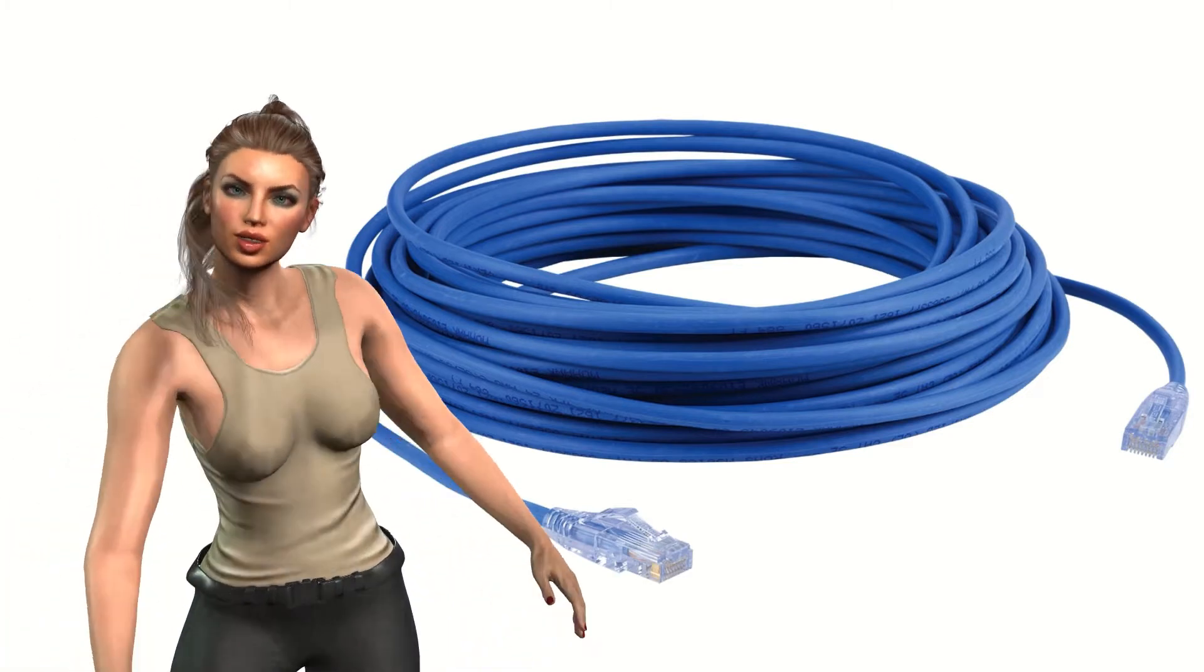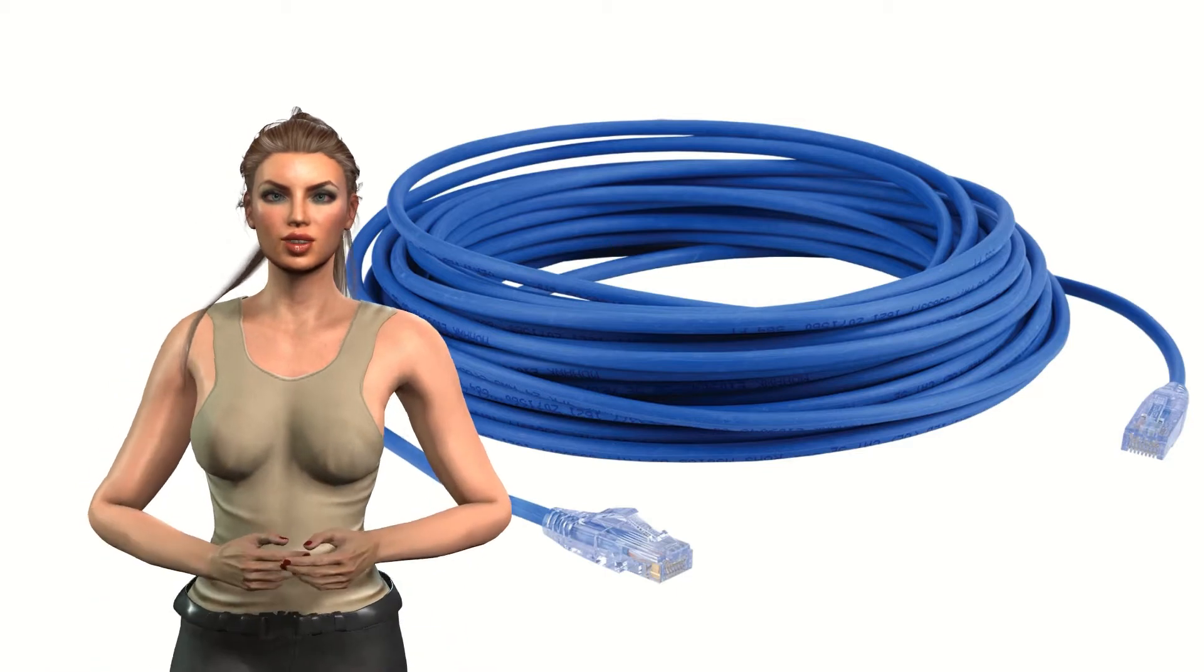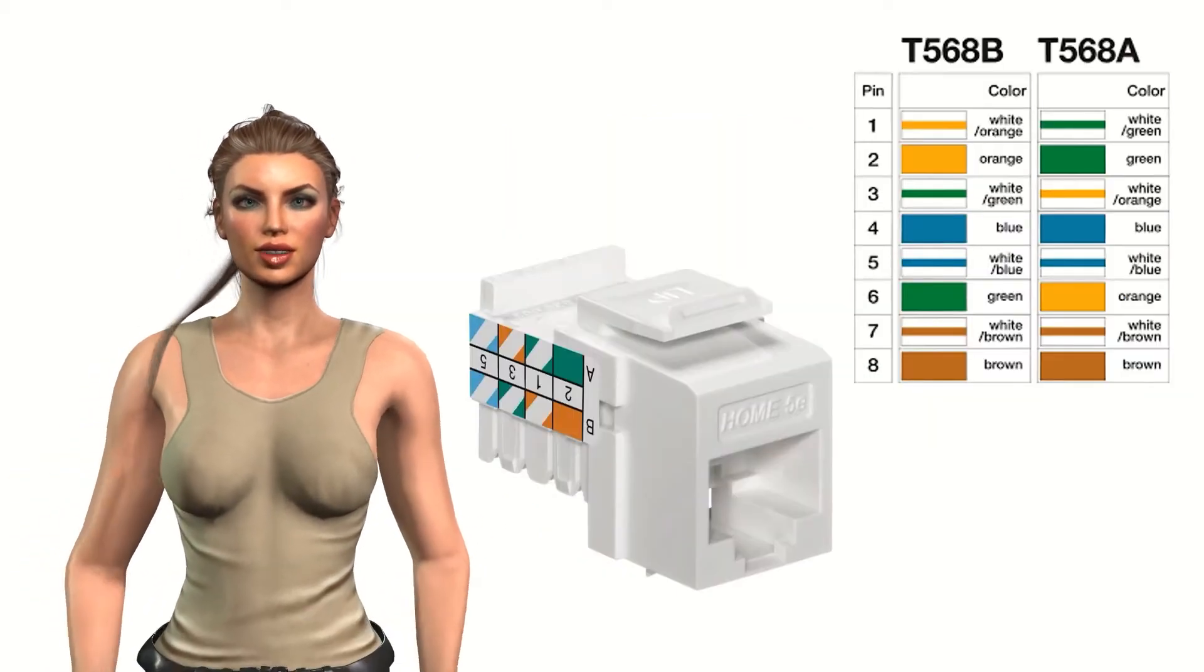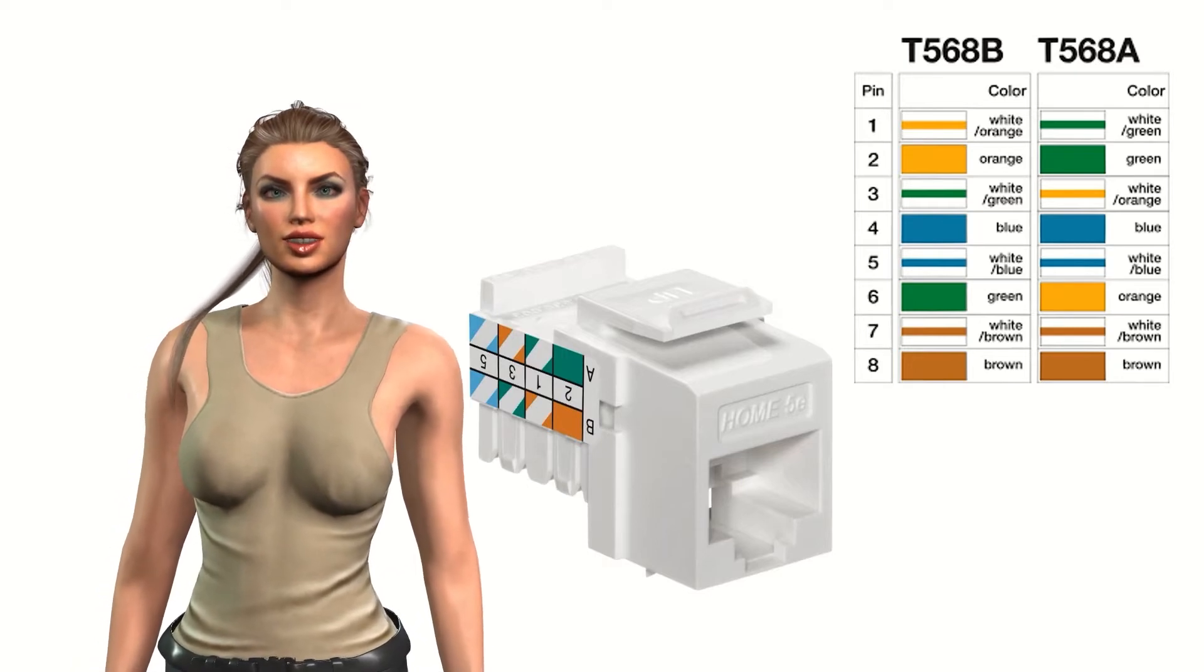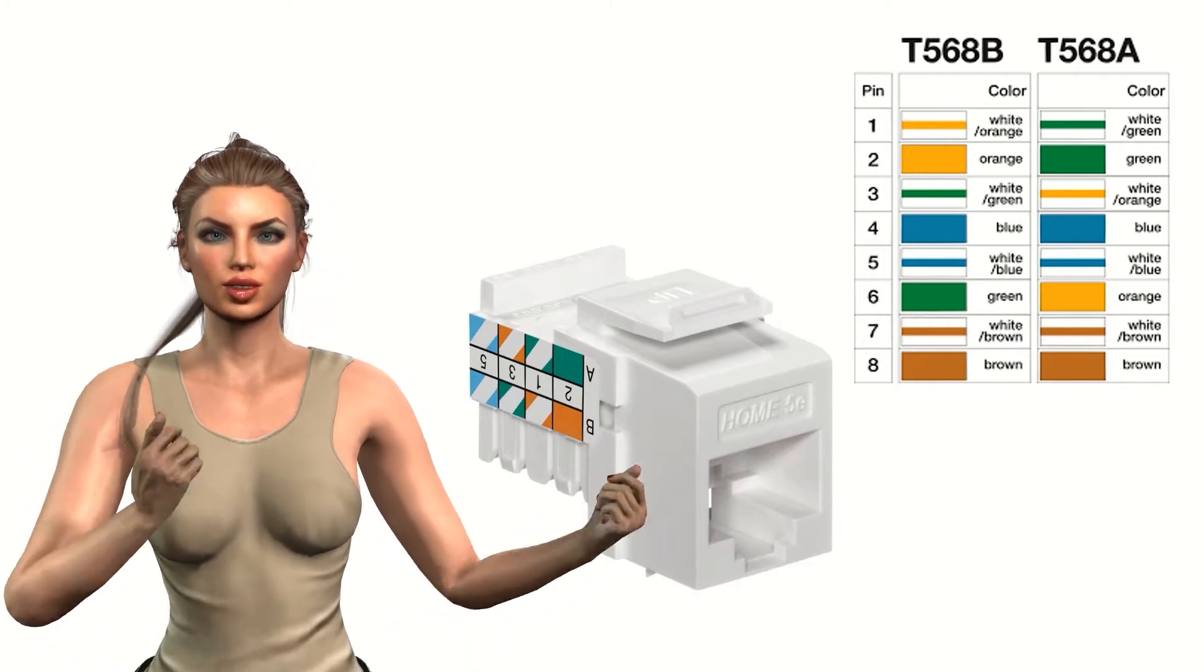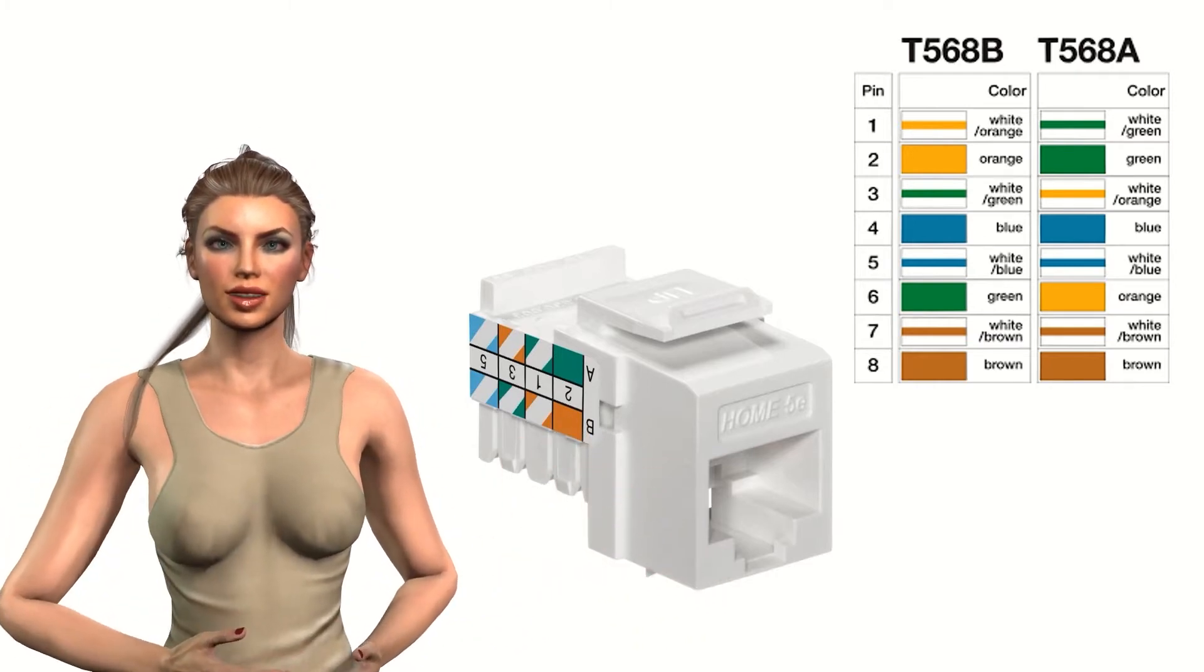As always, the first inspection to be carried out is the visual one. In that way we can see if there are connection errors in the connector pins. For example, we can verify if the same color configuration T568A or T568B has been used at both ends of the cable. We can also see if there are any cables not connected or broken.